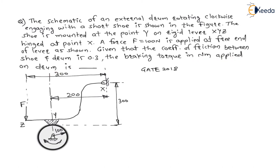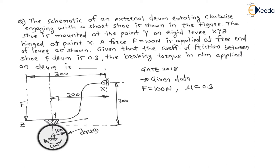Now the question is to find the braking torque. The given data is: force F = 100N, coefficient of friction mu = 0.3. The brake drum is rotating in clockwise direction as shown by the arrow, and there is a shoe in contact with it. We have to find the braking torque in newton meter.